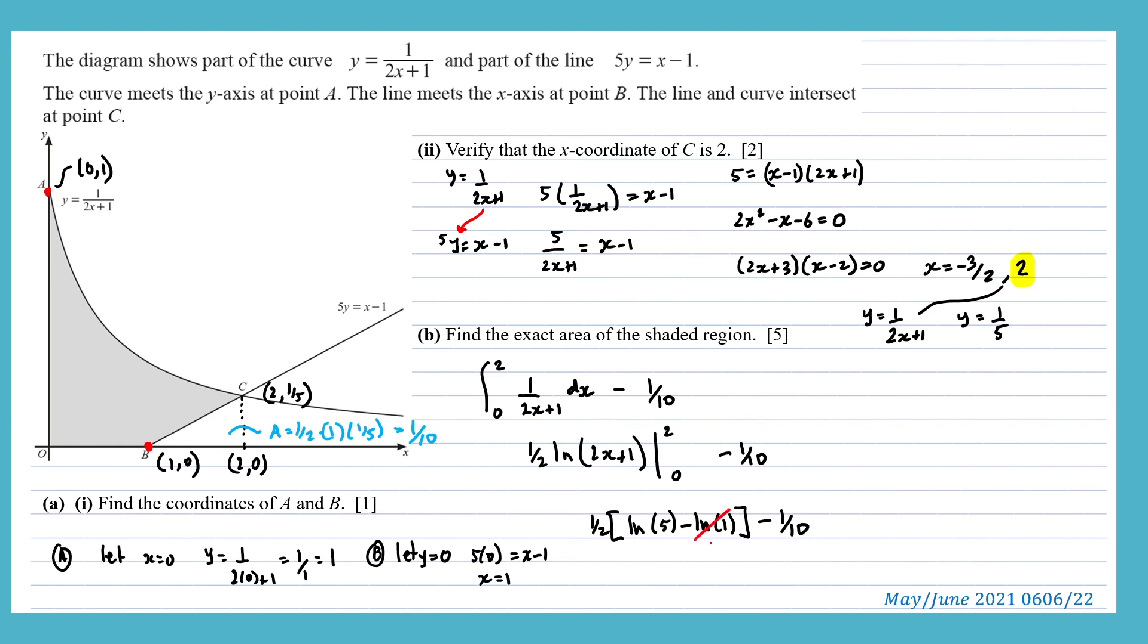Natural log 1 is 0. So we'll have a half natural log 5 minus 1 tenth. And we can change that to natural log root 5 minus 1 tenth. This is the area of your shaded region.